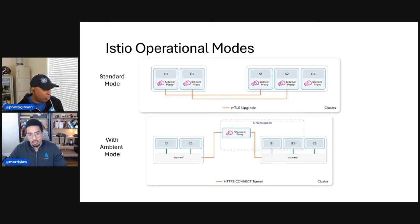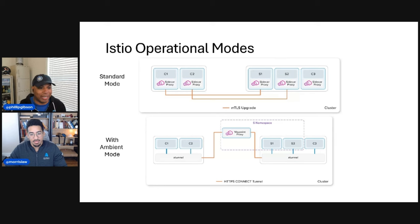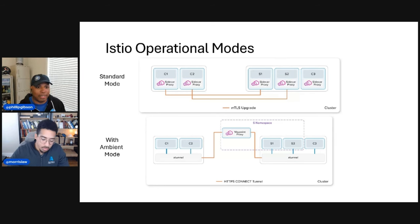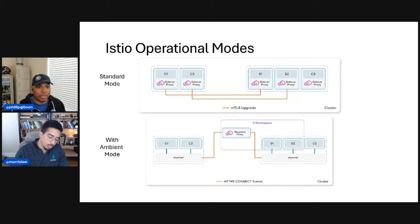With layer seven policies, you still hit your ztunnel local on the node, but if there's a policy for a specific service path, traffic traverses through the waypoint proxy, which validates whether you can talk to that particular service at that particular path. If everything checks out, it passes you on. Jeremy, please correct anything I may have misstated, and maybe talk about how you got into this new architecture and what you've been working on.